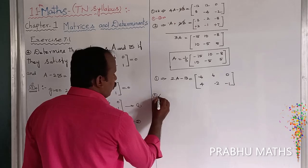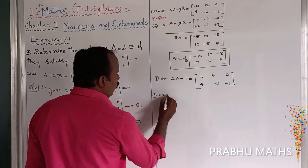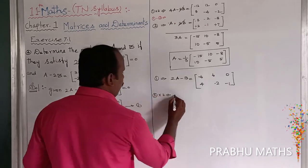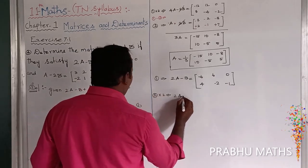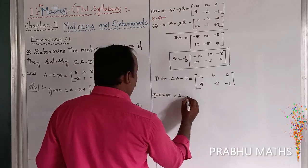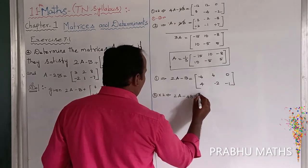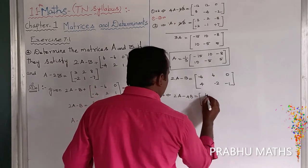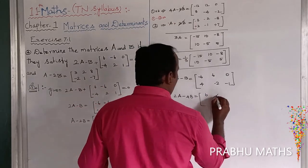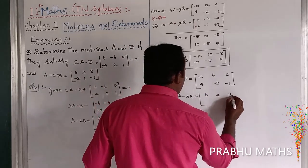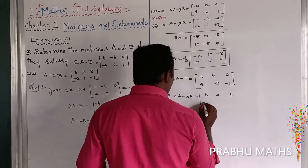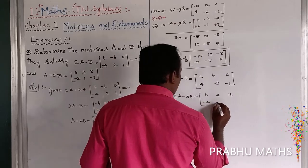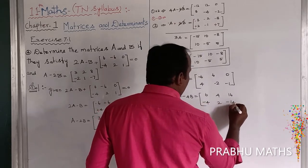Next, equation number 2 multiplied by 2, which implies that 2A minus 4B is equal to: 6, next one 4, next 16, next one minus 4, next one 2, minus 14.